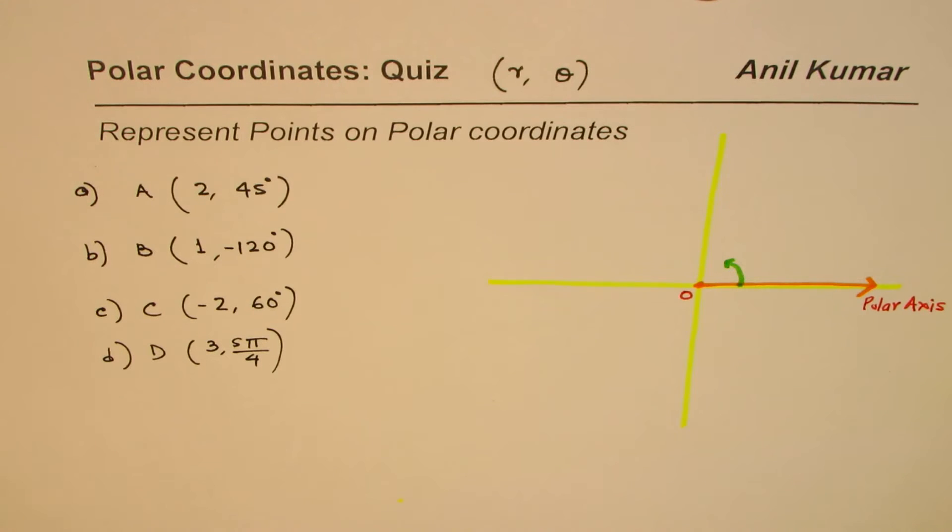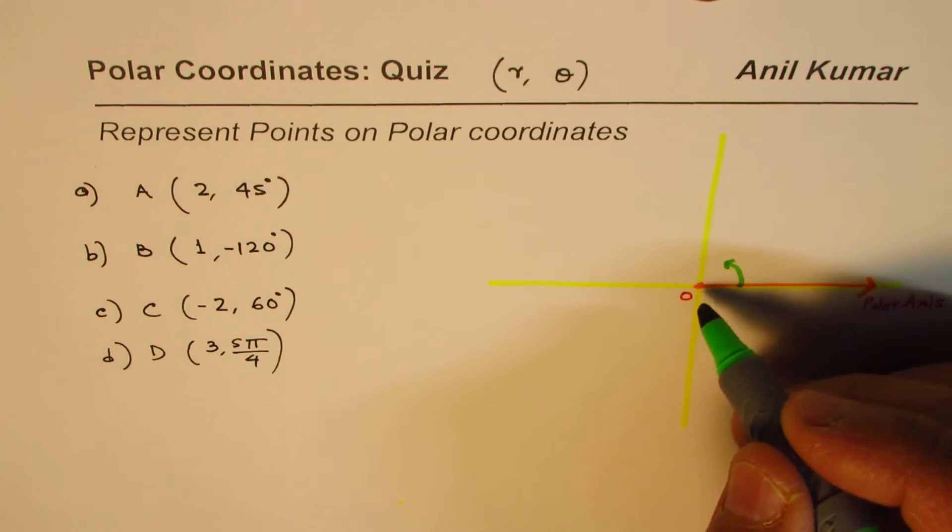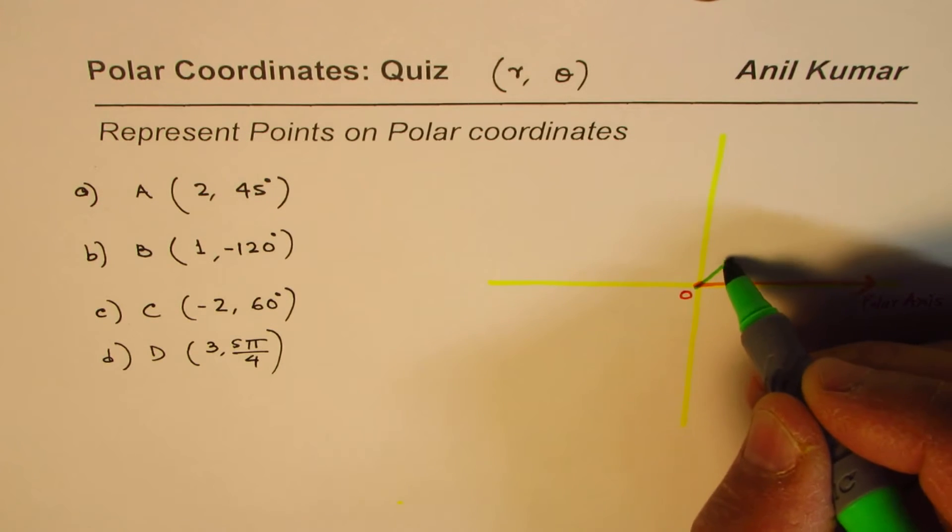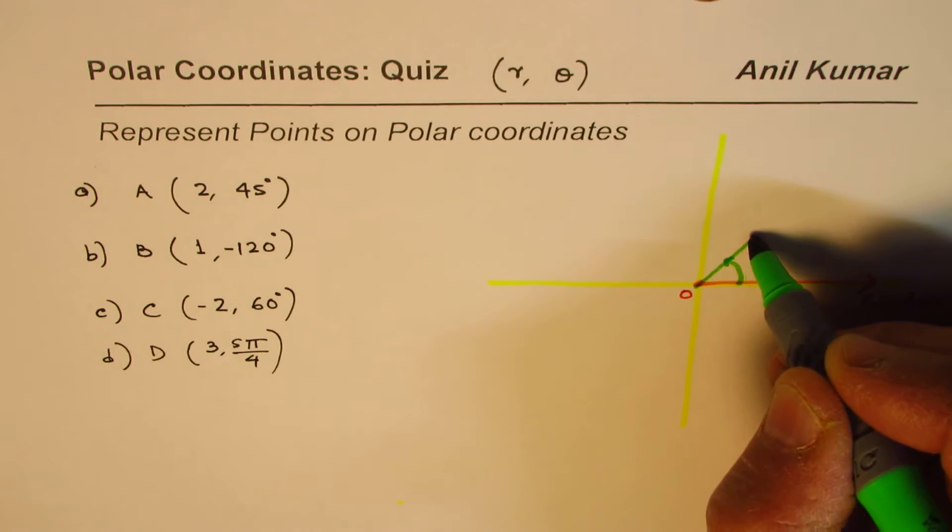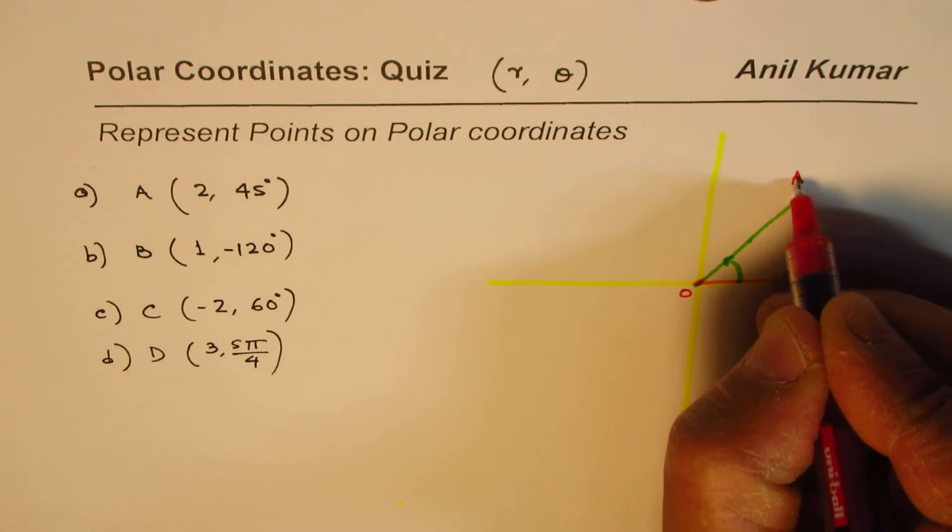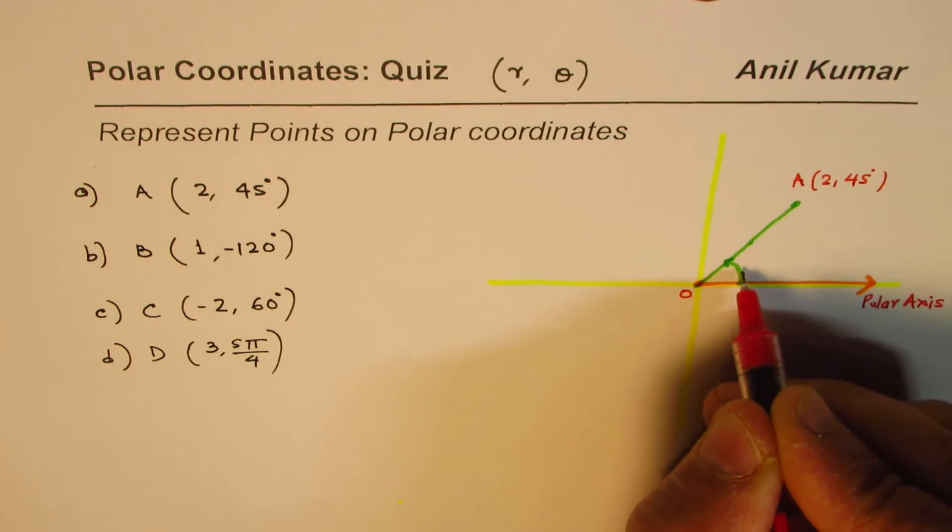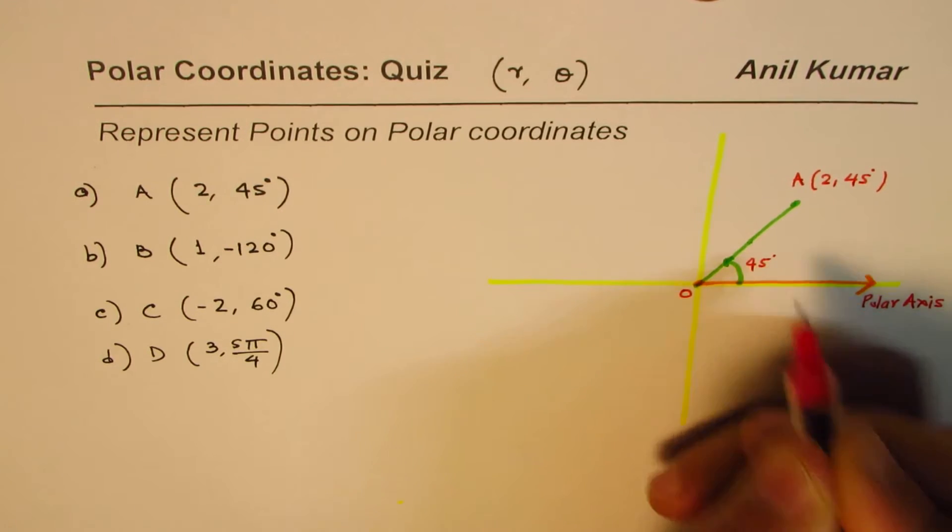These concentric circles are units apart. You can see these angles, also 15 degrees in this case. We'll make kind of a rough sketch. So we say two units is this much, this is one and then this is two. So this point is point A, which is (2, 45°), where this angle is 45 degrees.